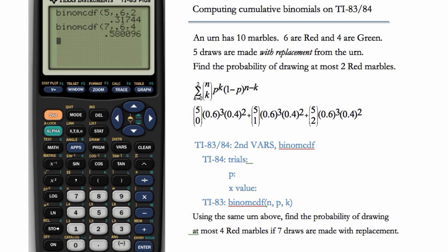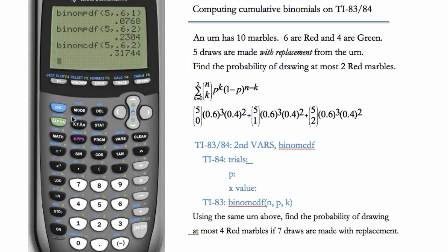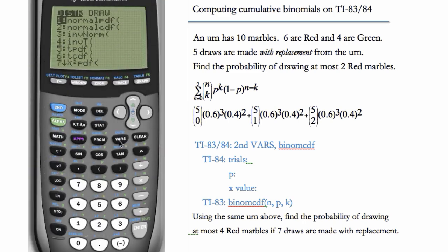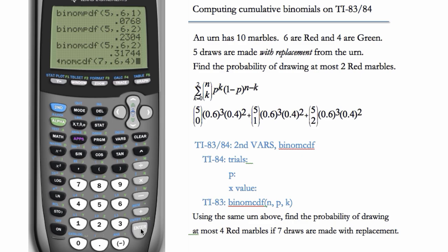If you're using the TI-84, it'll look similar, second vars binomcdf, trials is seven, p is 0.6, our x value is four. And we get the same answer.